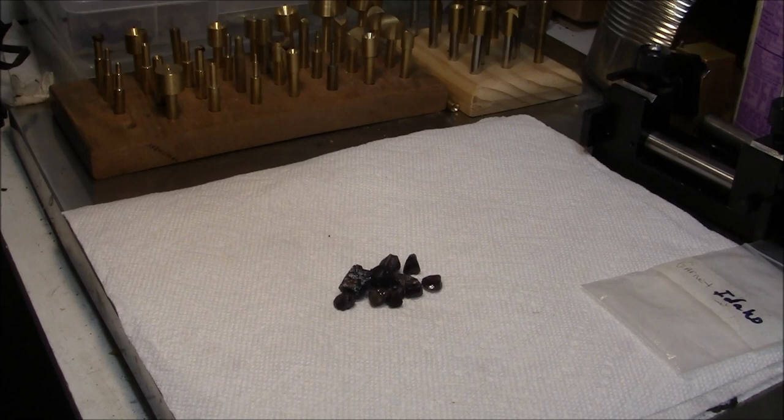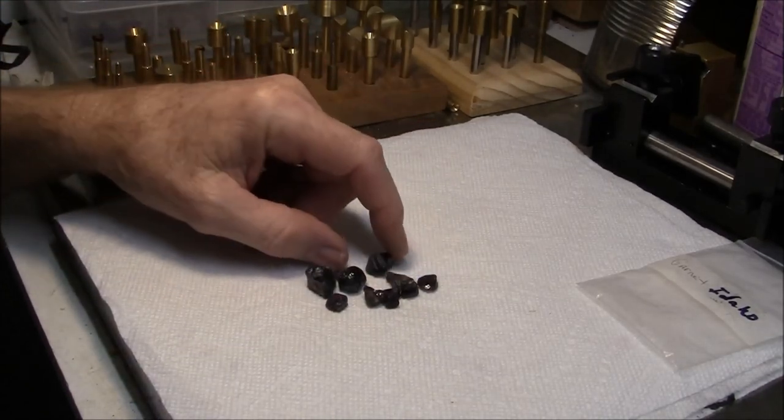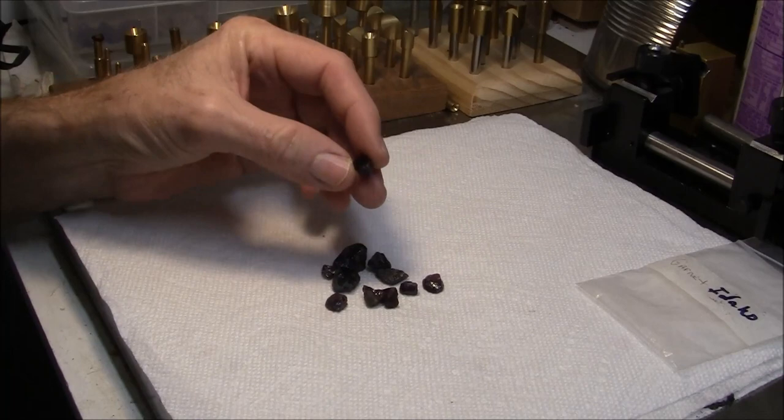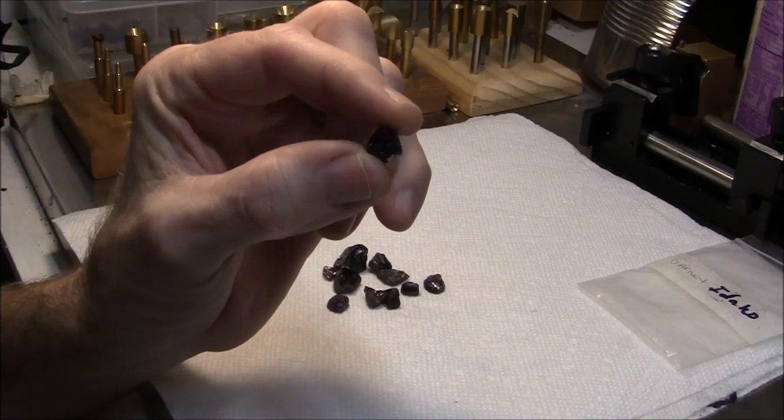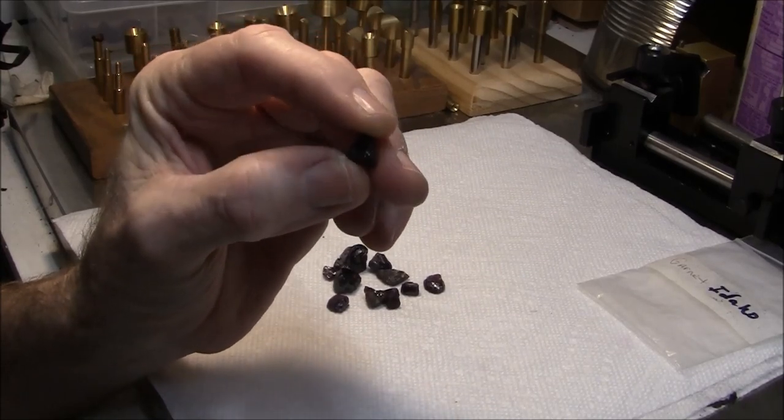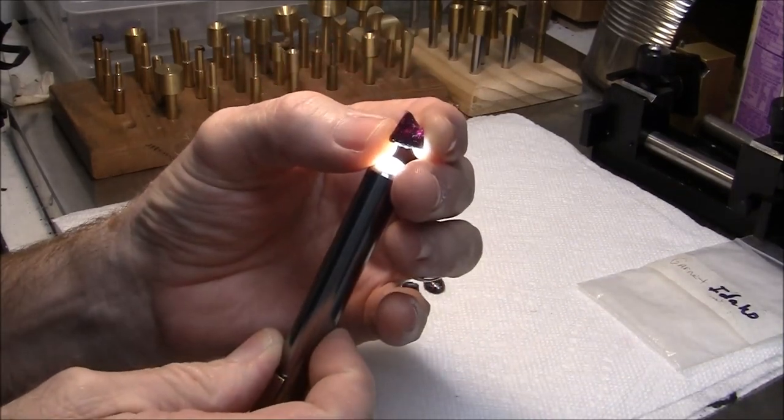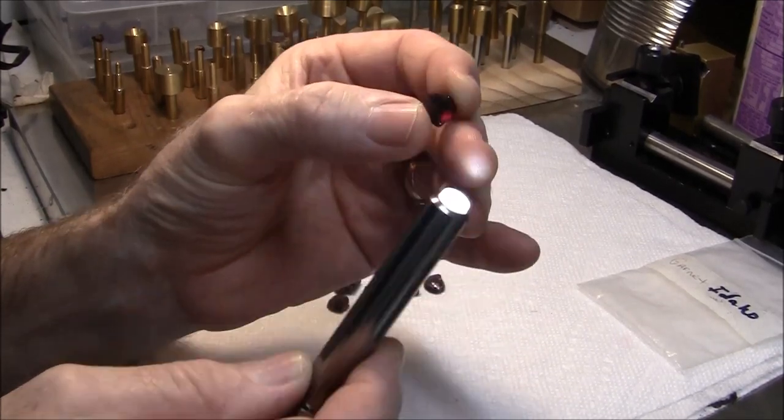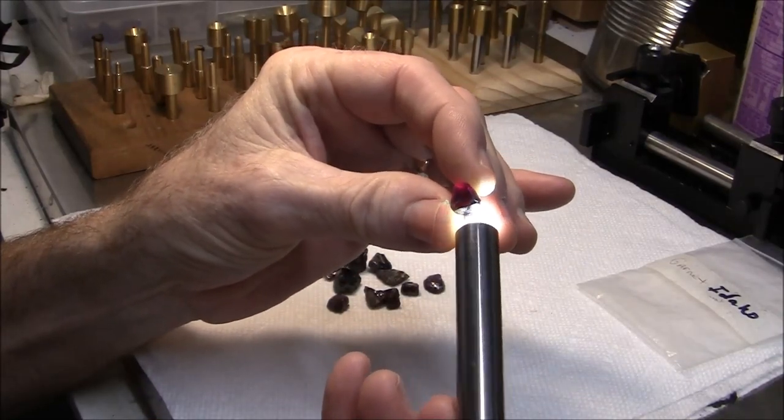Hello YouTube viewers and fellow faceters. Today I'm thinking about cutting some of this Idaho garnet here in front of me. I've got my eye on this piece here. I think this would make a nice trilliant shape, triangle shaped stone. It's a really nice color and it looks very clean, like there's no inclusions in it that I can see. Looks like a nice piece here.